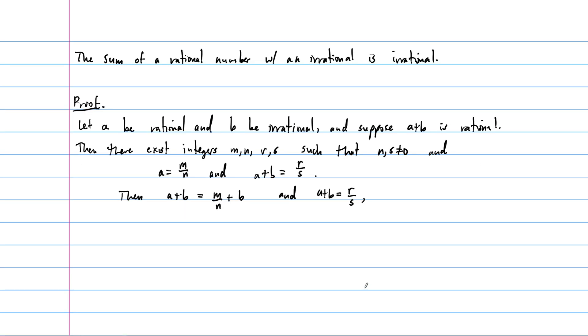So just by transitivity here, what's got to be true? Well, M over N plus B has to equal R over S. And at this point, we can just rearrange. So we can subtract this term from the other side.